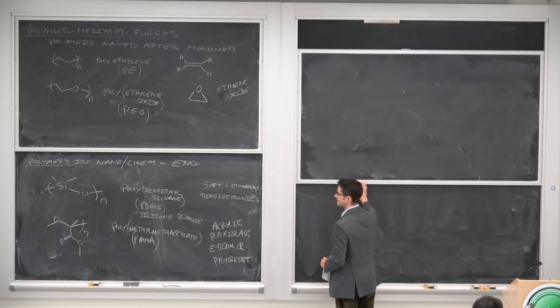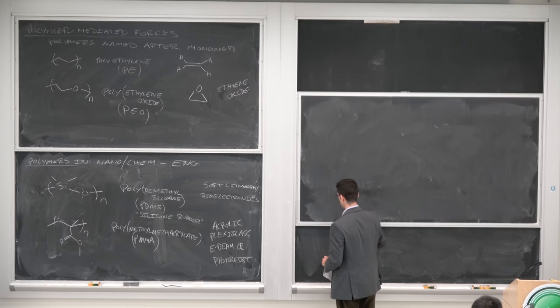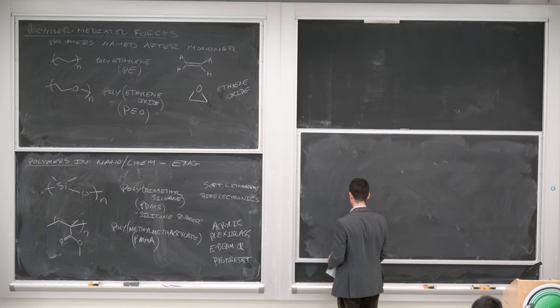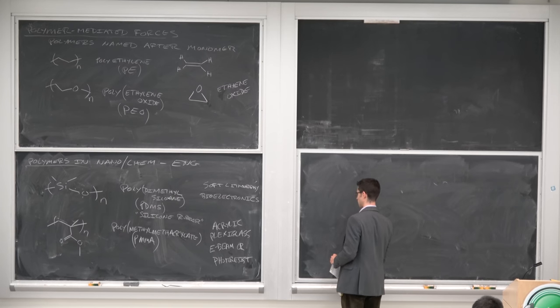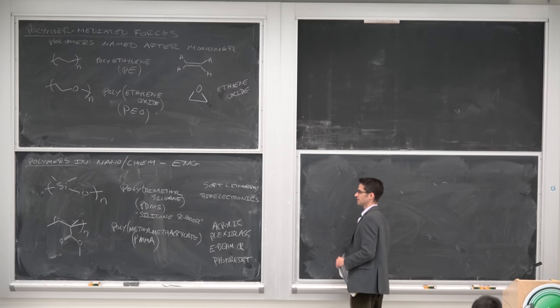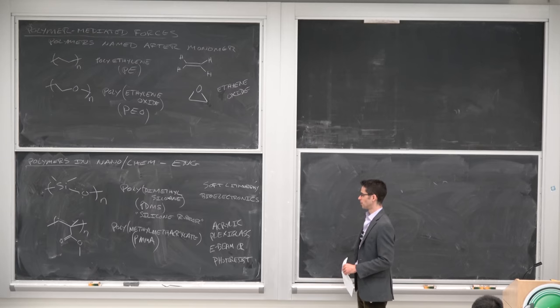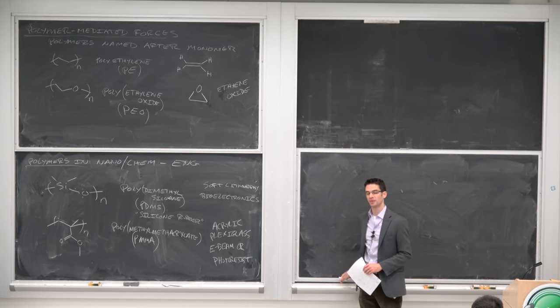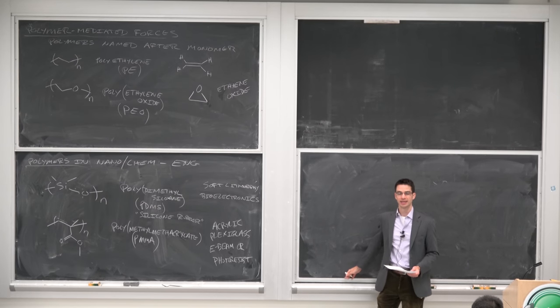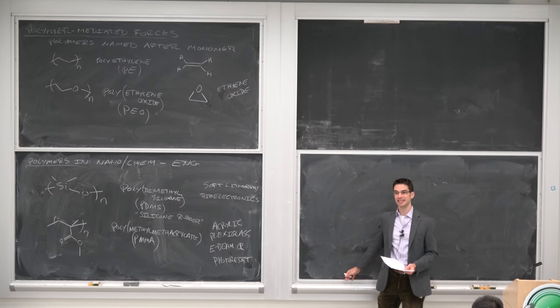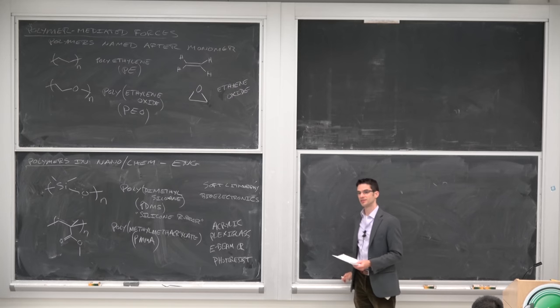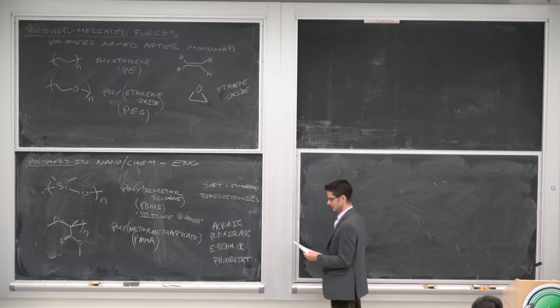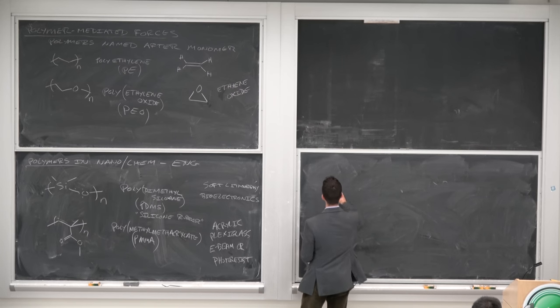The sizes of polymers are determined by molecular weight. Unlike a small molecule, a polymer can exist in a range of molecular weights, and you can characterize it in a few different ways.